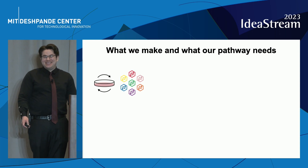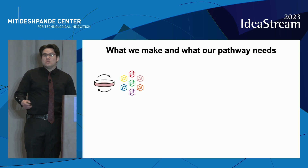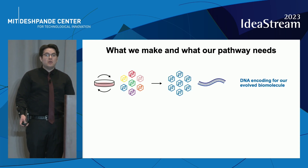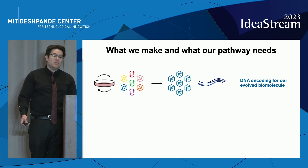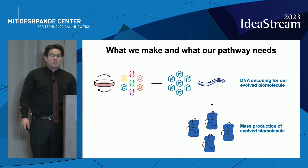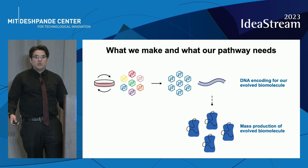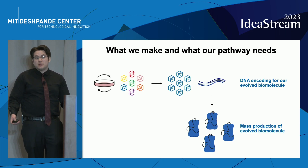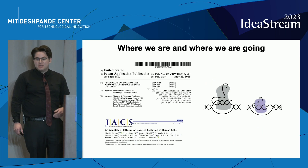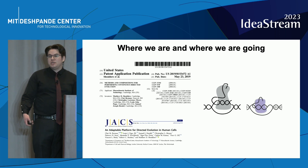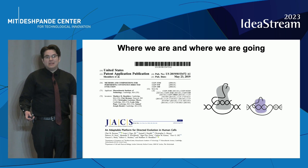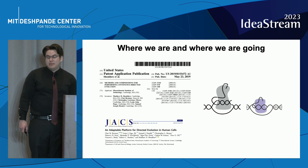This is very exciting for us. At the end of one of our evolution campaigns, what we obtain is the DNA that encodes for our evolved biomolecule that we know works in human cells. The next step in our pipeline is the mass production of these evolved biomolecules, if they are going to be developed further as therapeutics. We have published our system in the scientific literature, and we have been awarded a patent on our methodology and compositions of matter — the viruses and cell lines that we use — and we are looking towards developing a biopharmaceutical company using our system.